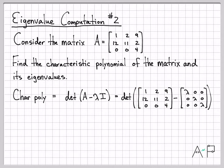All right, so if we go ahead and do the simplification to simplify this difference of matrices, that is one minus lambda, two minus zero is two, nine minus zero is nine, 12 minus zero is 12, 11 minus lambda is 11 minus lambda, two minus zero is two, and so on. And now we need to compute the determinant of this matrix.